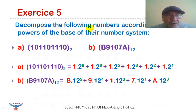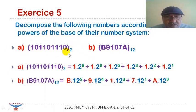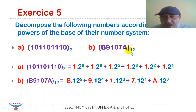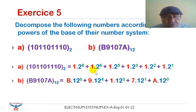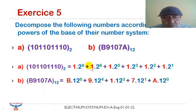Now we have to decompose the following numbers according to the powers of the base of their number system. We have one number in base two — what we call binary — and one number in base twelve — what we call the duodecimal base. For the binary number, we have ranks zero through eight, so we have one multiplied by two to the power eight.